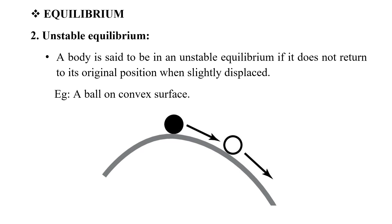The next state is unstable equilibrium. A body is said to be in unstable equilibrium if it does not return to its original position when slightly displaced. An example is a ball on a convex surface.